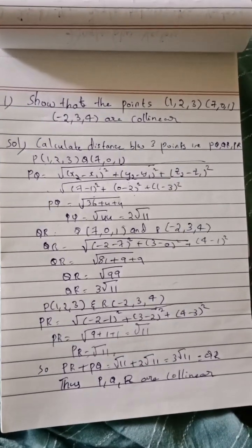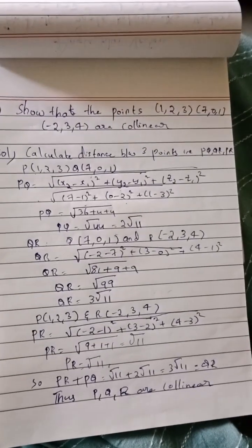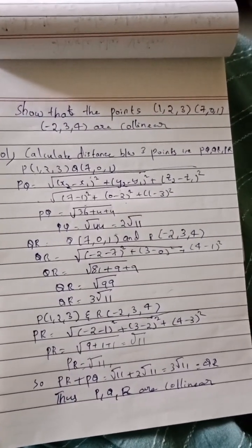Welcome back to my channel. In this video I'm going to explain how to find the points of collinear. First we have to calculate the distance between P, Q, R - that is PQ, QR, and PR.